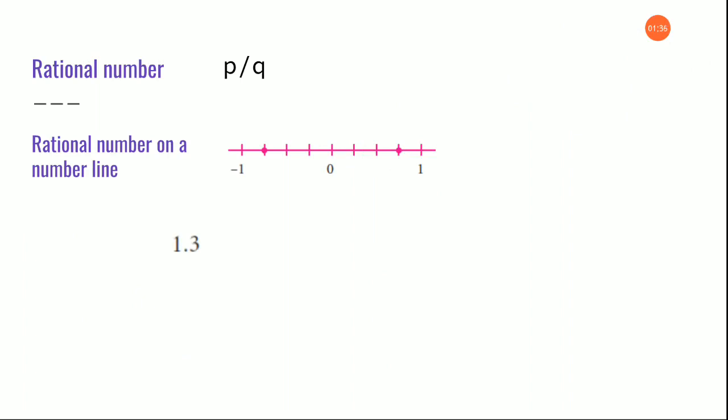Now, you are going to write a decimal number on a number line. In yesterday's test, so many children happily wrote from 1 to 2, then in the number line they mentioned 1.1, 1.2, 1.3 and marked it. But that is not the correct approach — you are going to convert it to a rational number first, and then only spot it on the number line. In order to convert this decimal into a fractional number, you must take the decimal point away by multiplying and dividing by 10, and the answer we get is 13 by 10.